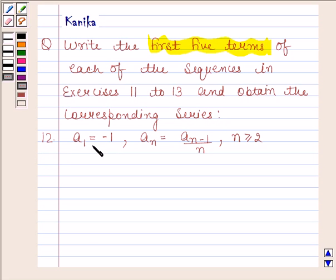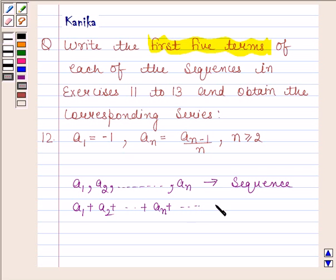The third part is a₁ = -1, aₙ = aₙ₋₁/n, n ≥ 2. Before solving this question we should know that if a₁, a₂, and so on aₙ is the given sequence, then the expression a₁ + a₂ + ... + aₙ + ... is the series associated with the given sequence.